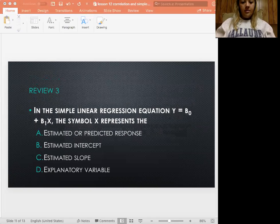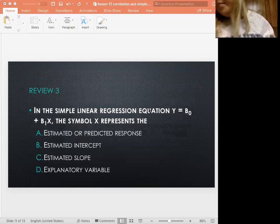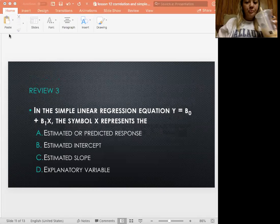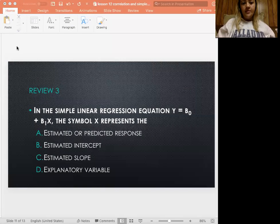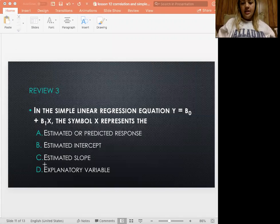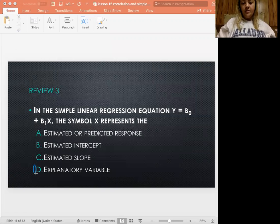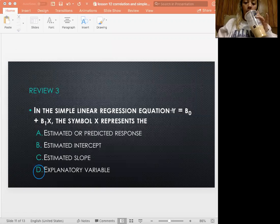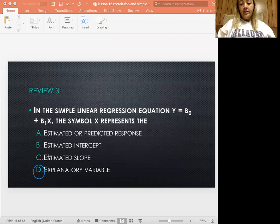All right, and then number three. So in the simple linear regression equation, what does x represent? So this is just kind of discussing which one is which. Okay, so our answer to this one is going to be D. Our explanatory variable is going to be represented by the x. b-subscript-1 is our slope, y-intercept is the b-subscript-0, and then the estimated predicted response is y. So honestly, these are actually written in the order that they appear in the equation, if that helps.